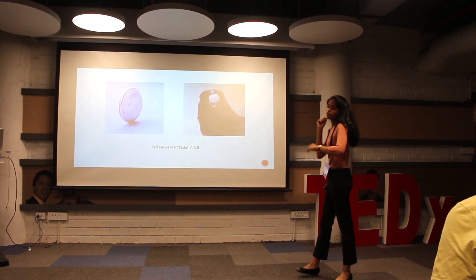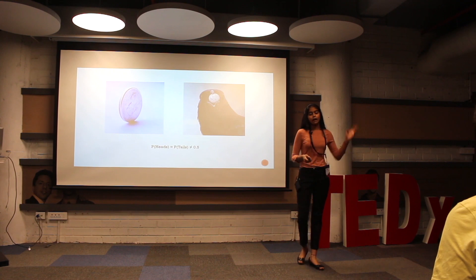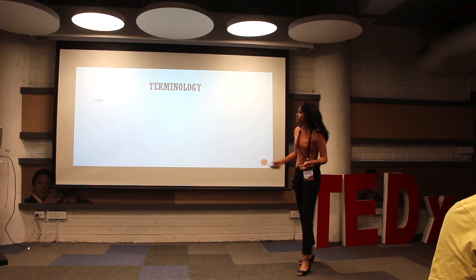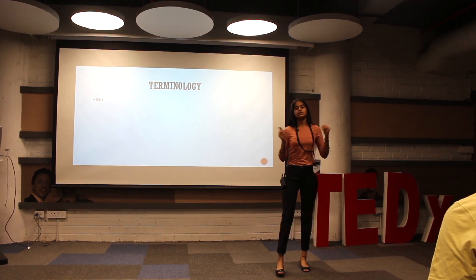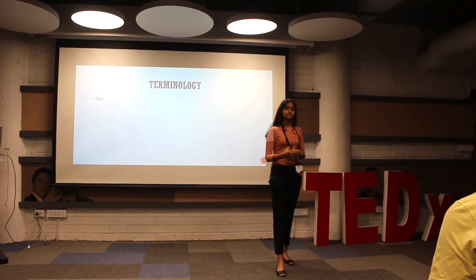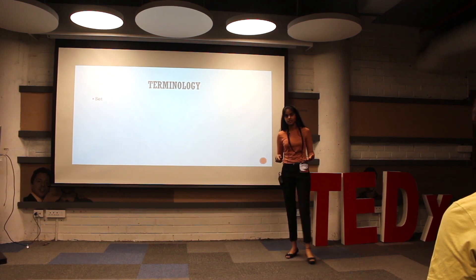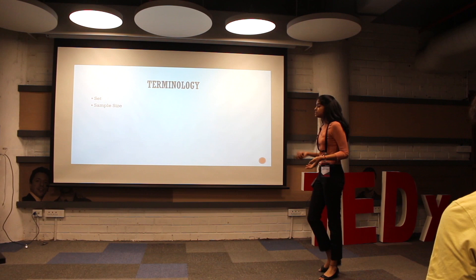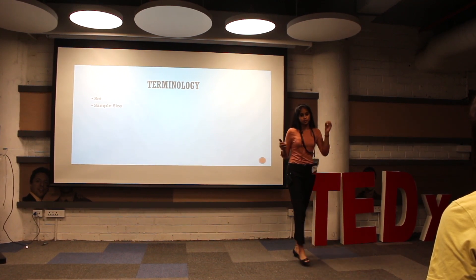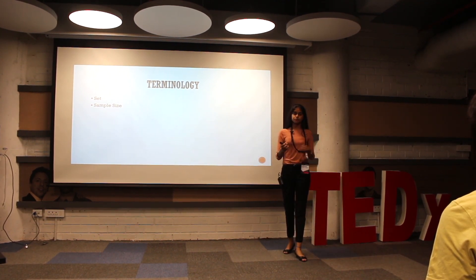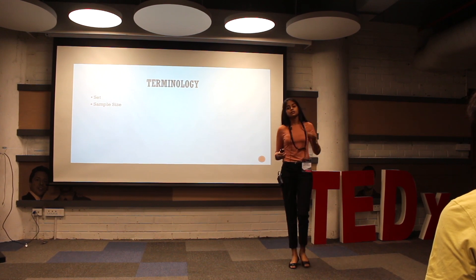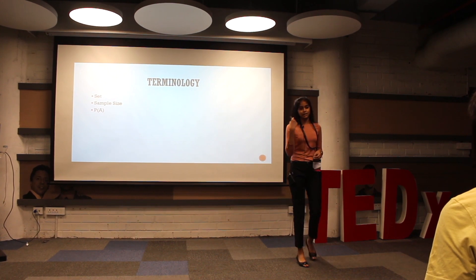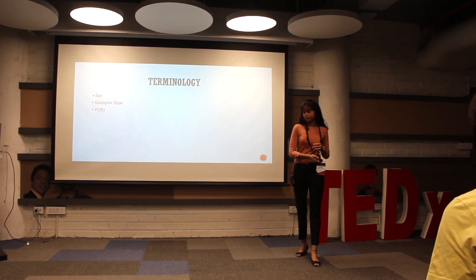Before I get on to a few more examples, I'm going to talk about a few common terms I'll be using a lot from here on. A set is a collection of data — or in our case, a collection of possibilities or outcomes for which we're going to be calculating the probability. A sample size is the number of individual data pieces or possibilities in that given set; in other terms, it can be said to be the size of the set. P of A, as many of you may know, is the probability of a set event A happening, and it's calculated using the following formula.